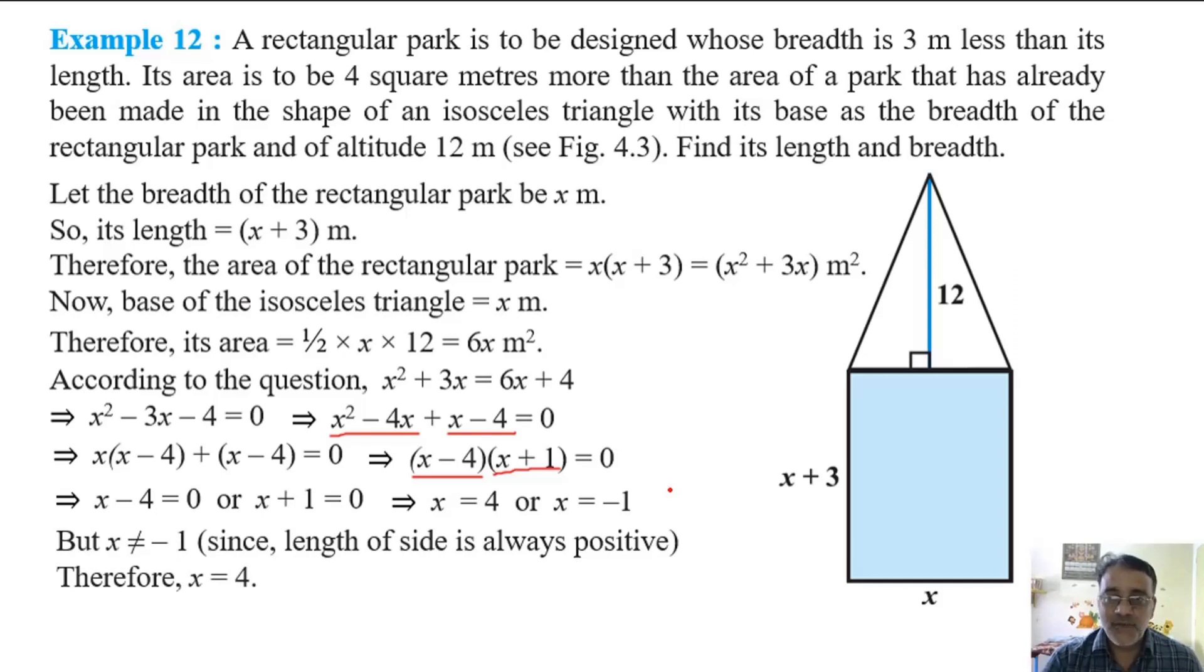Therefore x equals 4. So breadth is x that is 4 and the length will be 4 plus 3 that is 7. So the breadth of the park is 4 meters and its length will be 7 meters.